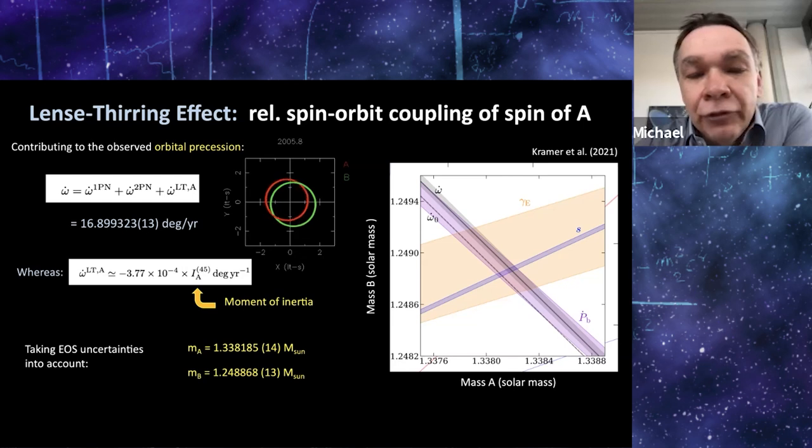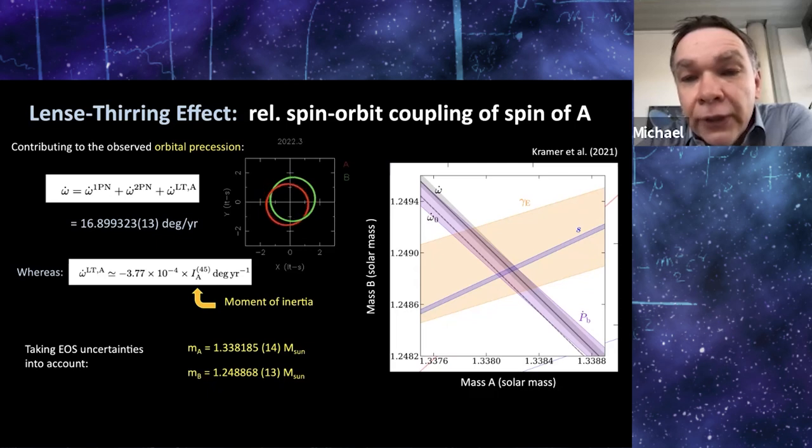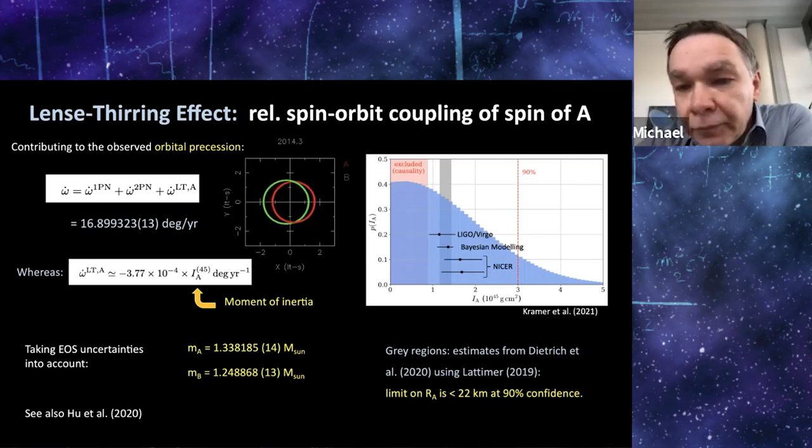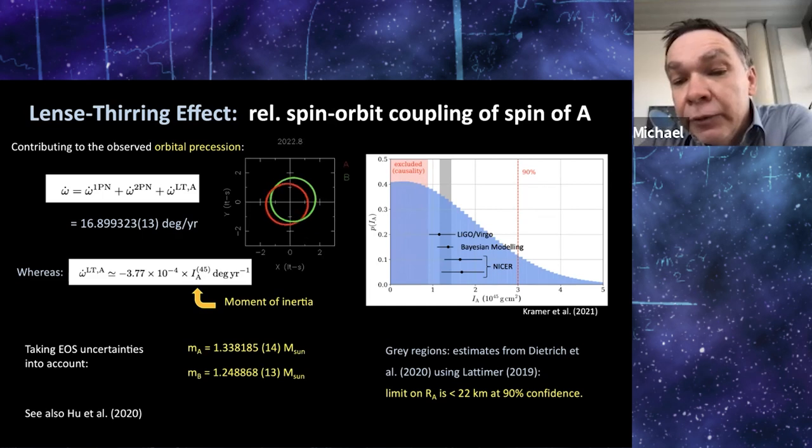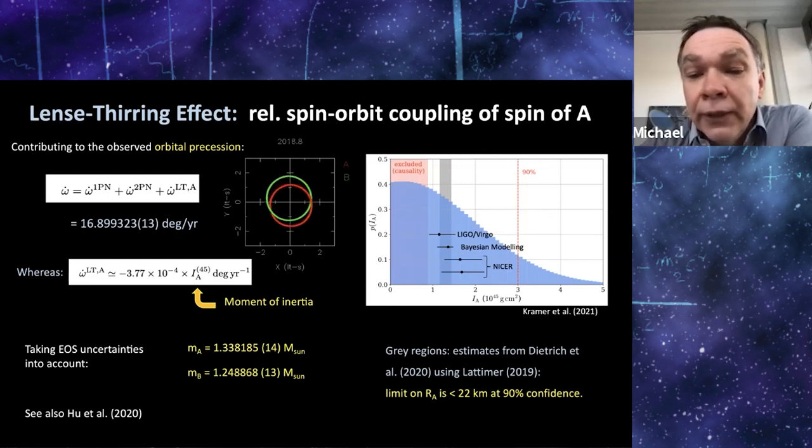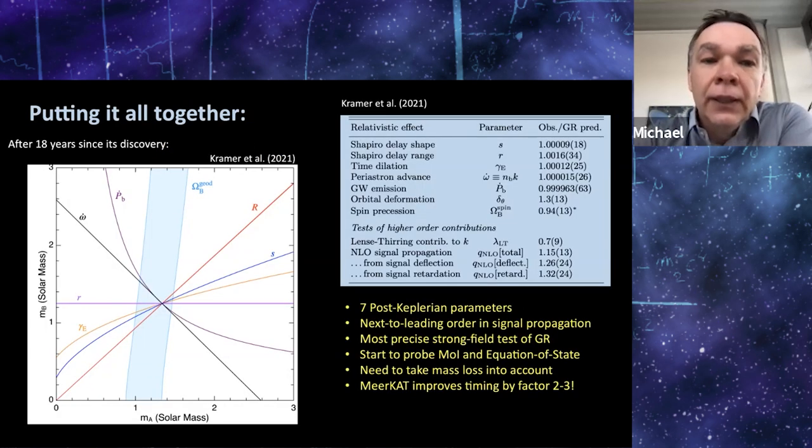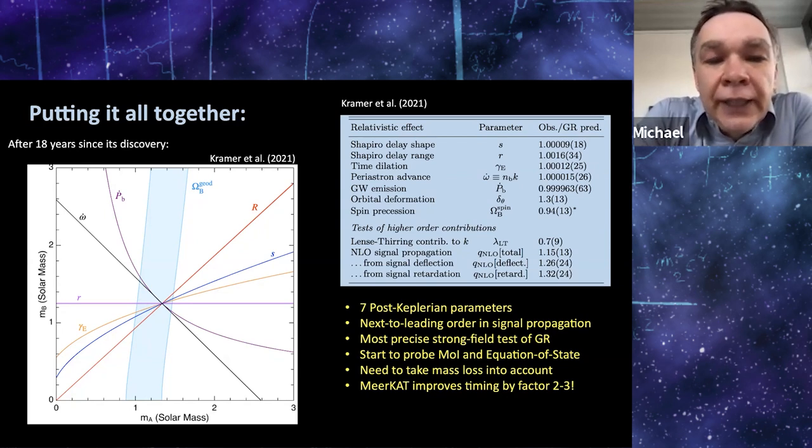By marginalizing over different possible equations of state, we can determine the mass of the two pulsars very precisely, and in fact, we can then also try to put limits on the moment of inertia that we basically obtain. This is a diagram that is basically a probability density function of our measurements. And at the moment, we can only give you an upper limit on the neutron star radius of 22 kilometers. Of course, it's not competitive in that sense with, for instance, the NICER results. But as you can see, we start just basically from pulsar timing, start to constrain the radius of the neutron star, which I think is a very nice result. And if you follow the paper, we show you how this will improve quite dramatically in the near future.